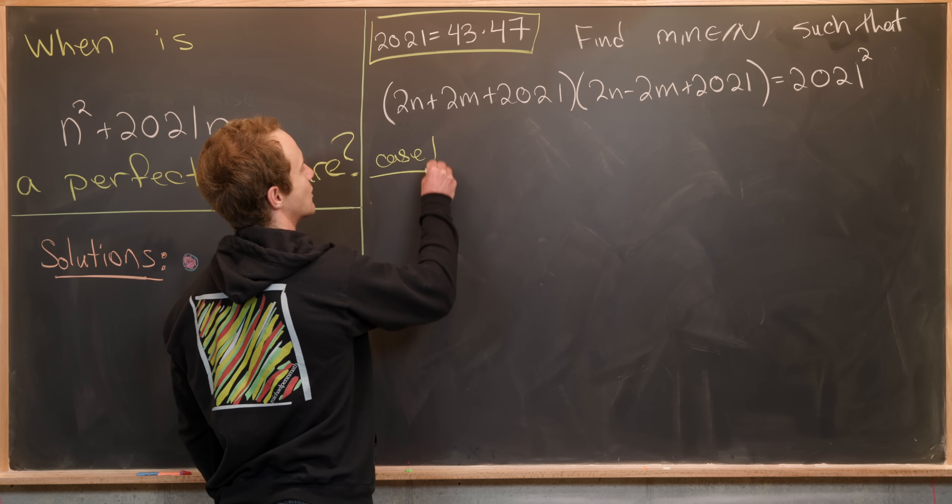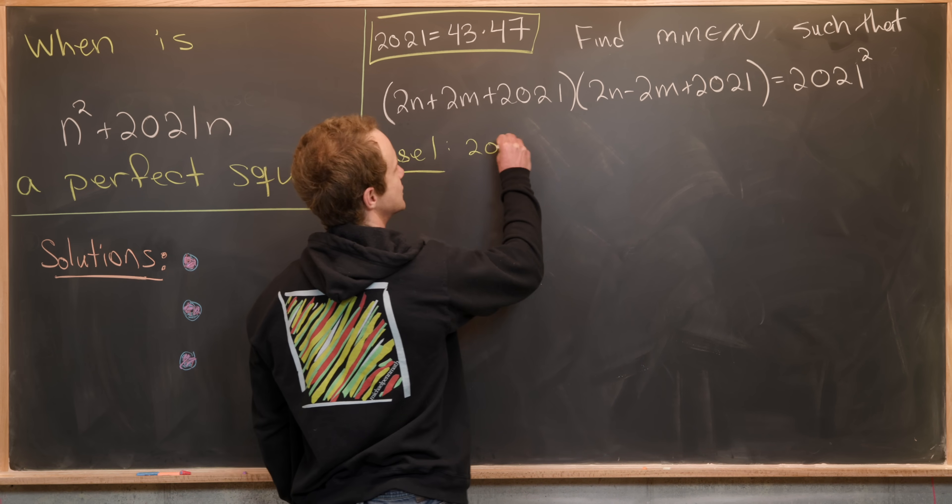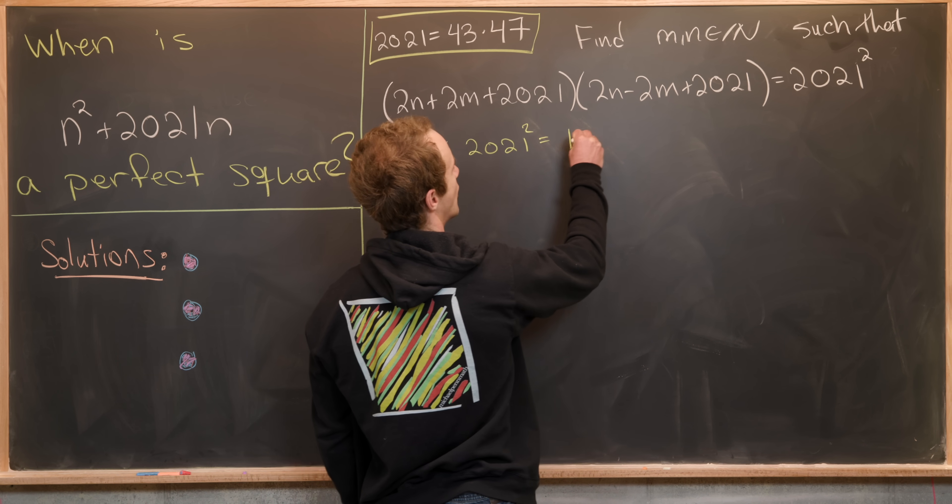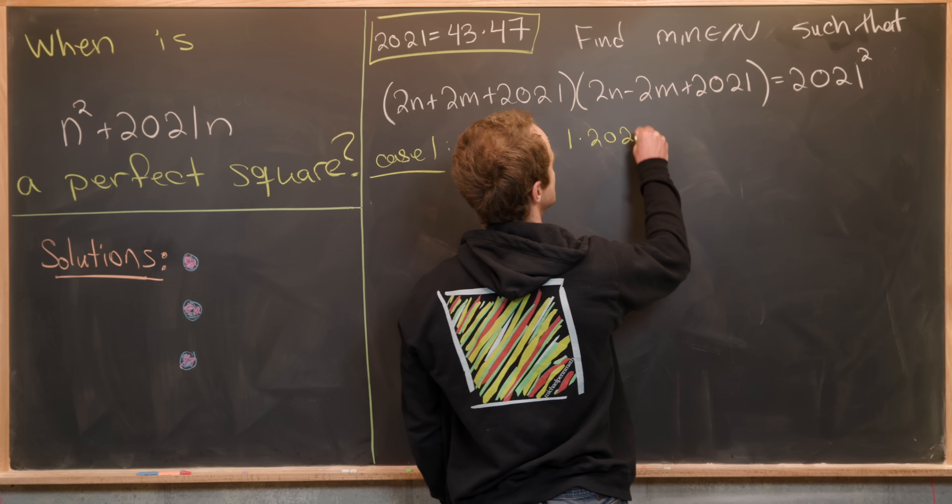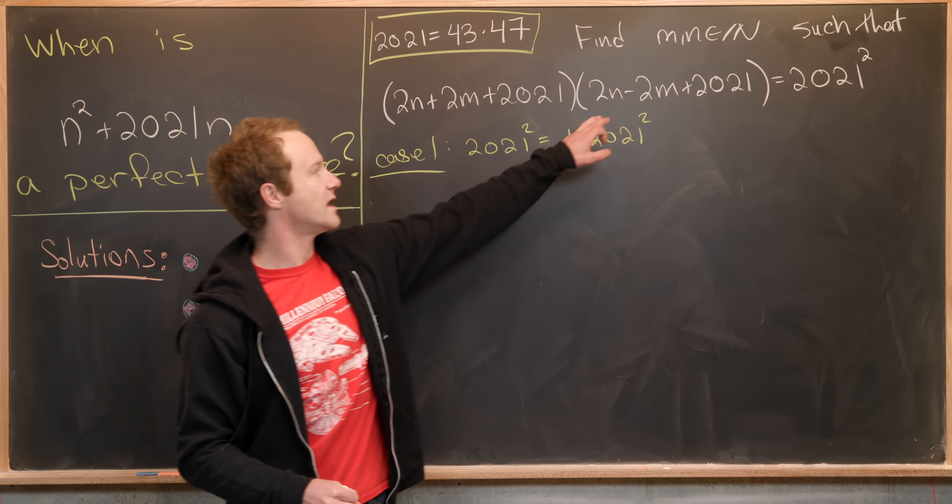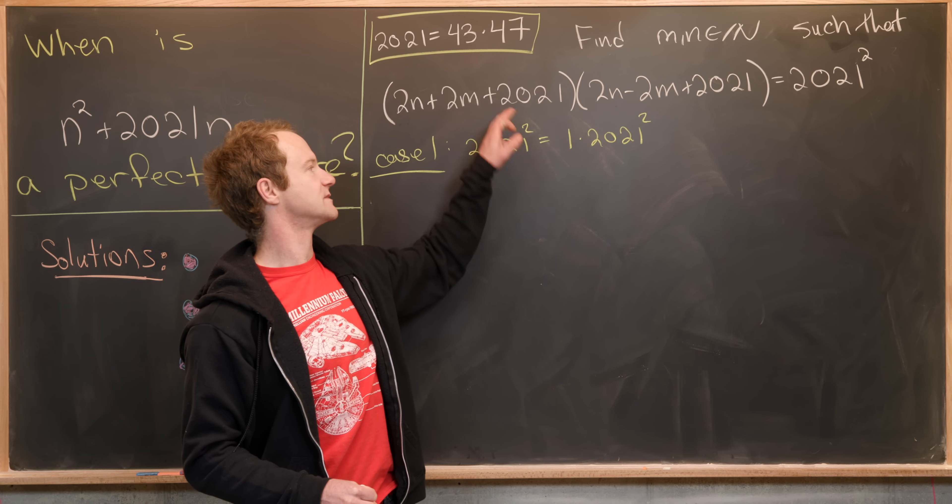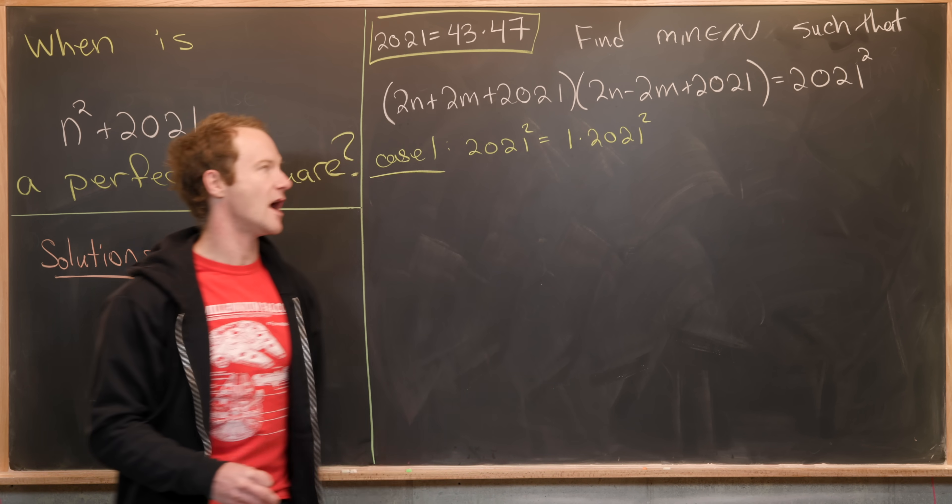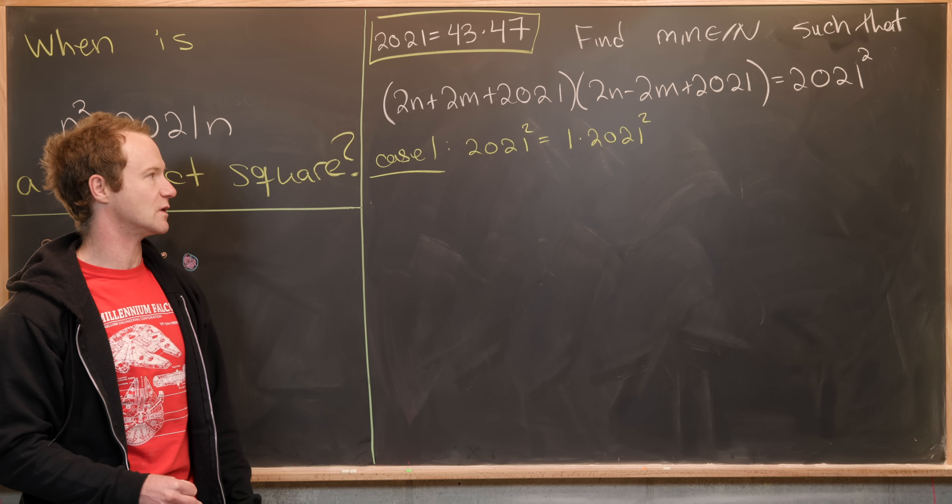So our case number one will be factoring 2021² as 1 times 2021². So what I mean by that is that one of these terms is going to be one and the other one will be 2021 squared.